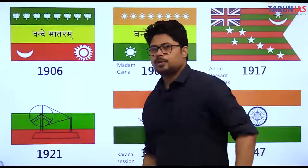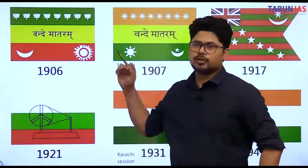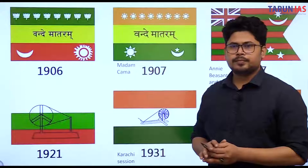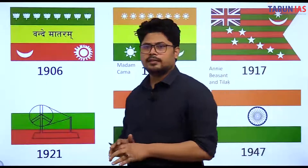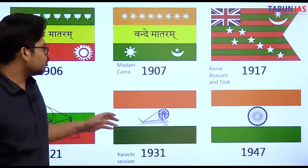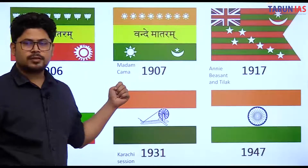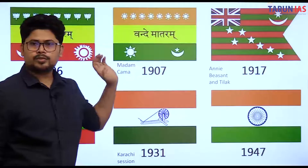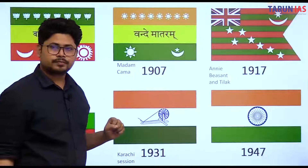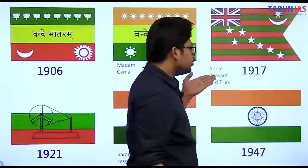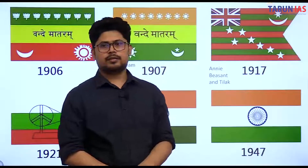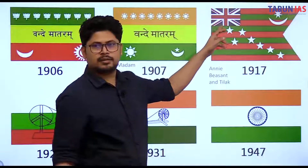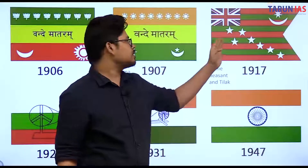In 1907, Madam Bhikaji Cama hoisted a flag at the Stuttgart Socialist Conference in Germany. Then in 1917, the Home Rule League of Annie Besant and Tilak came up with a new flag that included the Union Jack and seven stars representing the constellation Saptarishi.